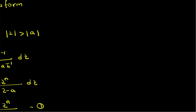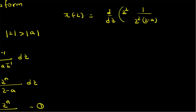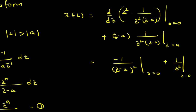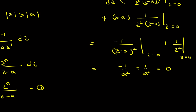Using this formula to evaluate x(-2): for the repeated pole at the origin, the first term is d/dz[z²·(1/(z²·(z - a)))] evaluated at z = 0, which gives d/dz[1/(z - a)] at z = 0, yielding -1/(z - a)² at z = 0, which is -1/a². The second term at z = a gives 1/z² at z = a, which is +1/a². These sum to 0.